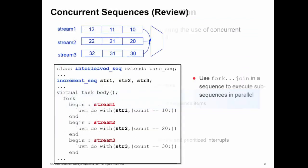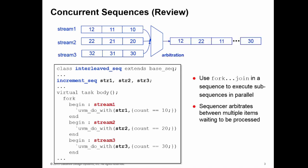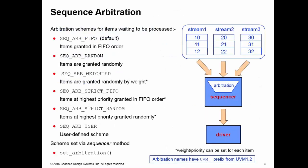Just to remind ourselves what we're doing here: we're executing multiple concurrent sequence items on a given sequencer, typically using a fork-join block in the body of a sequence to create three separate streams of data — stream 1 to stream 3 — generating different data items. We pass these down to the sequencer, and the sequencer has an arbitration method to select between the items currently waiting to be processed. In previous training bytes, we've had a look at the simple and the prioritized arbitration schemes. In this training byte, we'll have a look at the user-defined arbitration scheme.